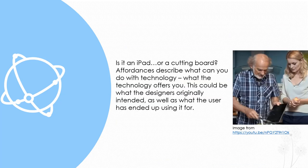Before I go on, I just want to explain the term affordance. We use this term all the time, but it actually has a quite specific meaning when describing technology. Affordances describe what you can do with technology and what the technology offers you — this could be what the designers originally intended as well as what the user has ended up using it for. Is it an iPad or is it a cutting board? The affordances of social media is that it allows us to publish to a very wide audience, which the average person could never do previously. It also allows us to communicate back and forth with others. But another affordance of social media is it allows advertisers to find out what our interests are and align their ads to what they think we want to see — an affordance not necessarily imagined by the original designers, but one that has been taken advantage of by many people to make plenty of money.